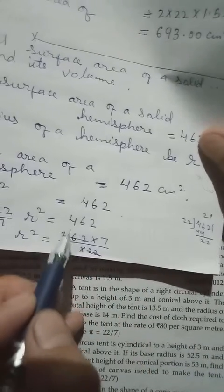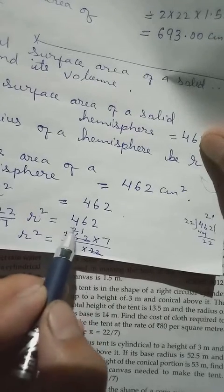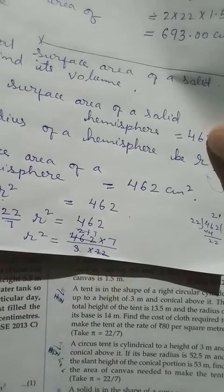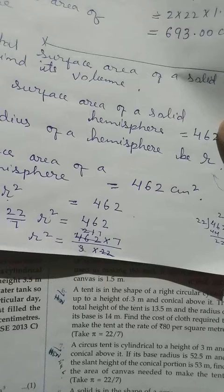Then 3 divided into 21 we get 7. So radius squared will be equal to 49, but we want only the radius.